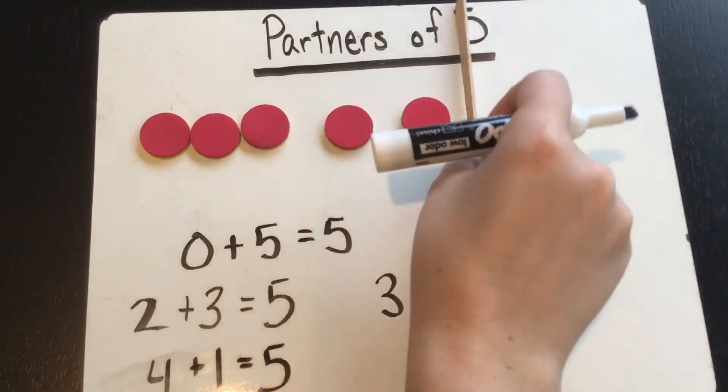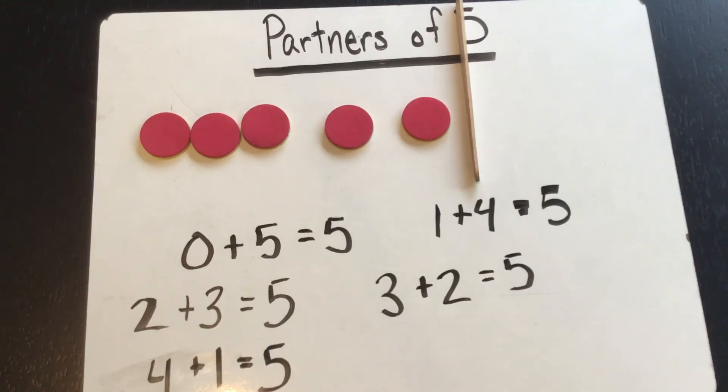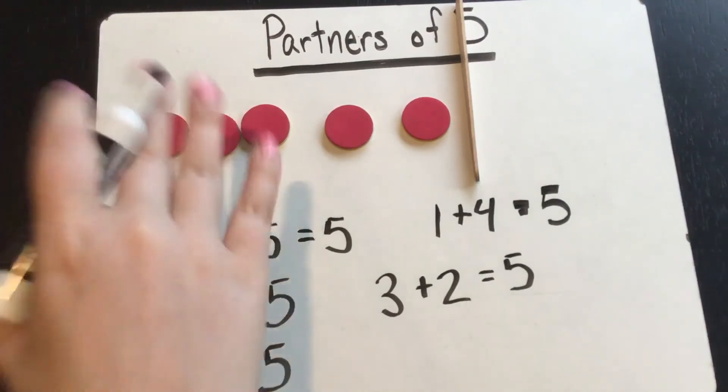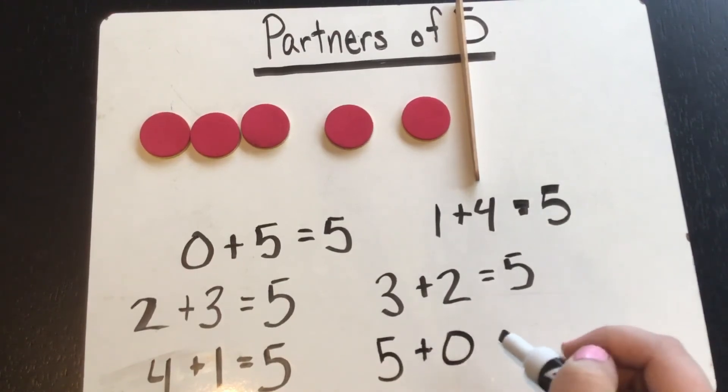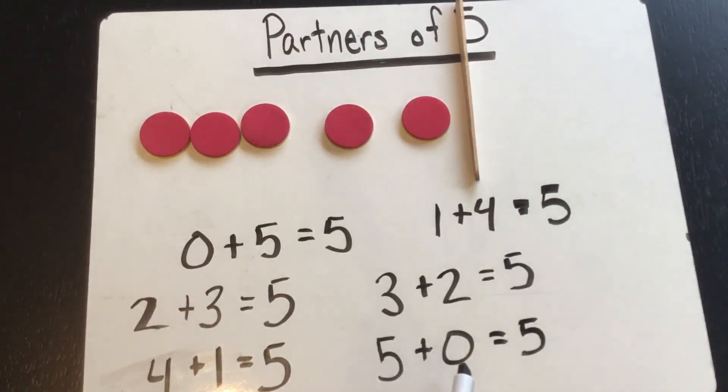And we're going to move it one last time to the very end. This time we have five over here and zero over there. So the partners are five and zero and the equation is five plus zero equals five. That means that if I have five and I get zero more, then I have five all together.